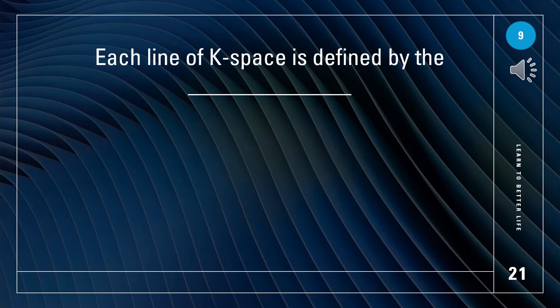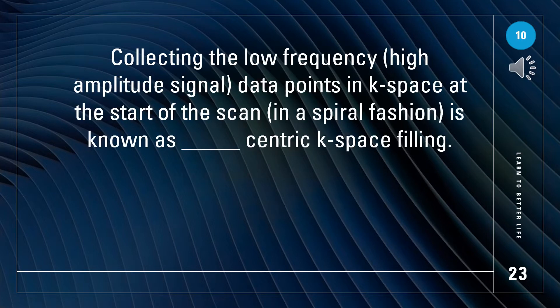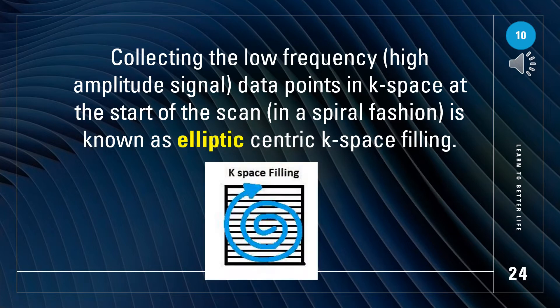Each line of K-space is defined by the phase encoding gradient. Collecting the low frequency, high amplitude signal data points in K-space at the start of the scan in a spiral fashion is known as what centric K-space filling? It's known as elliptic-centric K-space filling.